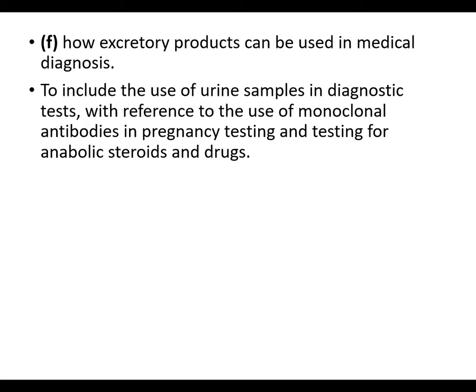The obvious one you can test urine for is glucose - we're not going to spend too much time on that - but you can test for glucose in the urine. You can also test for protein in the urine. We're going to focus on how we test for pregnancy, anabolic steroids, and drugs.